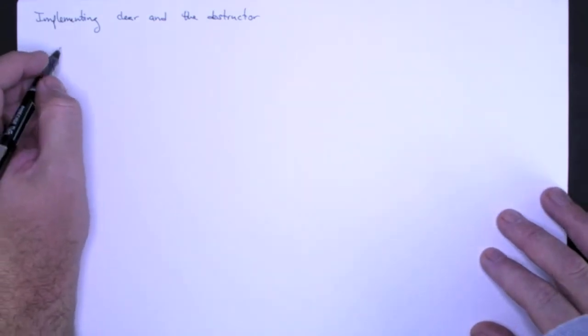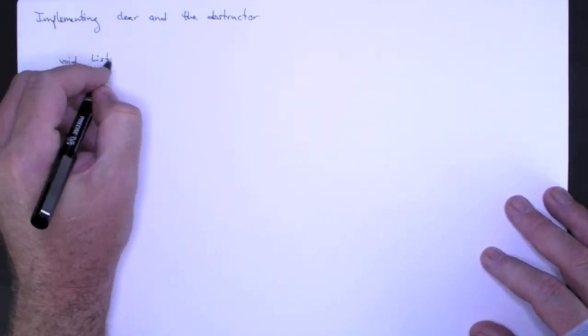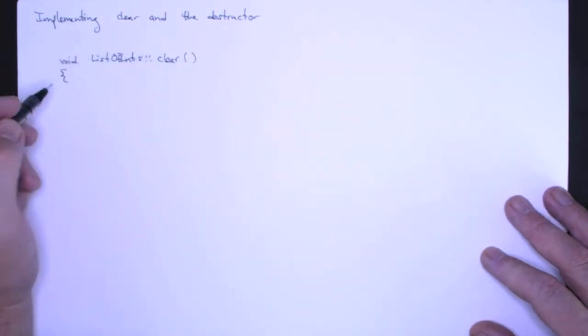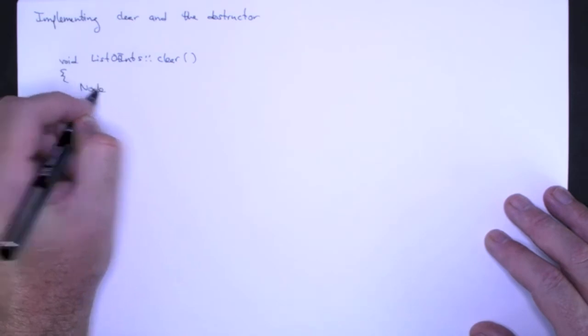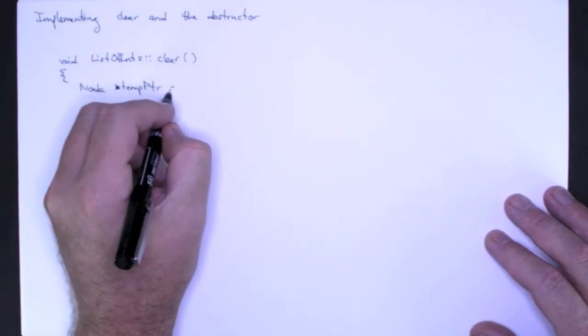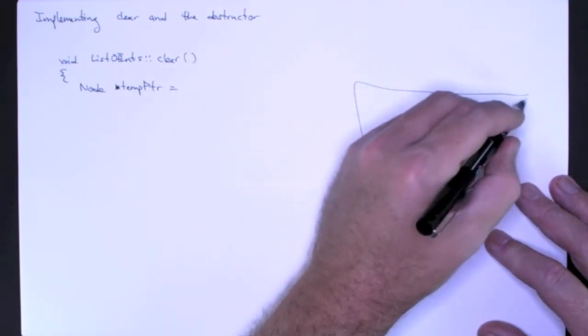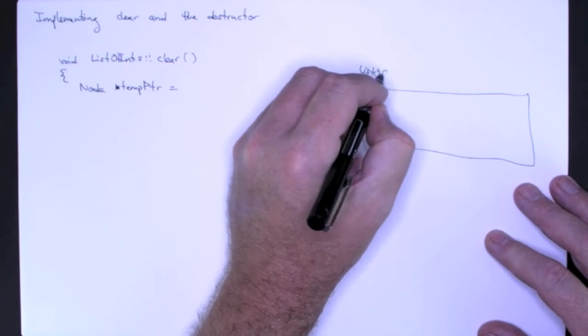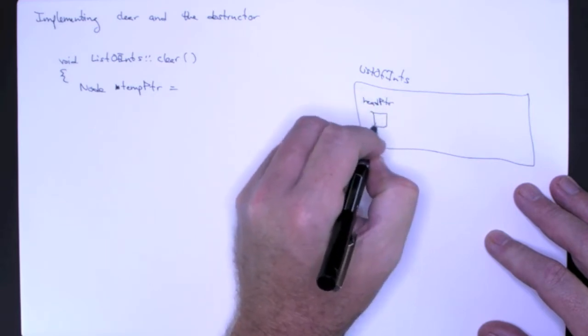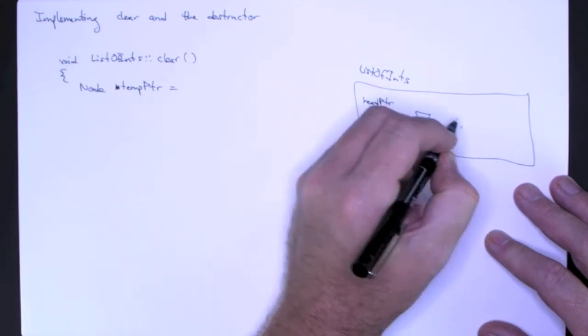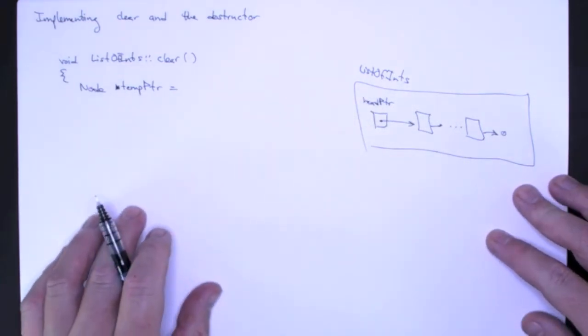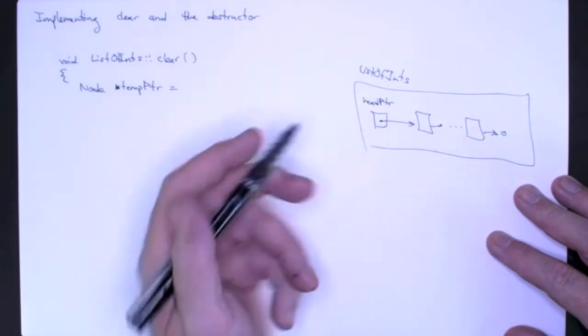So if we start off with our declaration for the clear method, list of ints, then all it's going to do is start at the beginning of the list. I'll just go ahead and use temp pointer again. Keep in mind what I'm going to have is my list of ints here, and I'm going to have my head pointer, and that's going to be a pointer to some number of nodes. I know that I've reached the end of the linked list because the last node in the list has a next pointer that points to null.